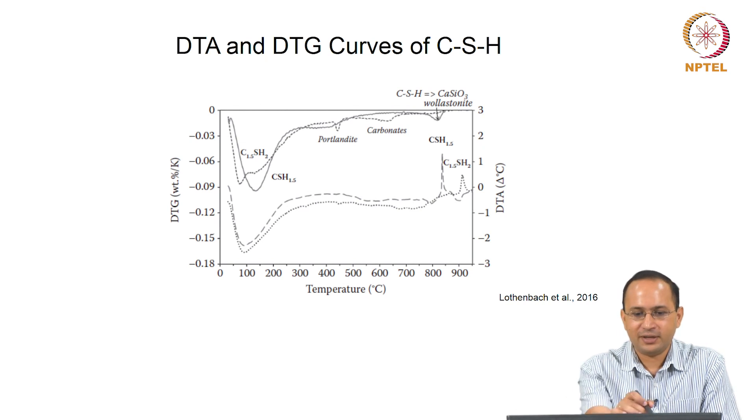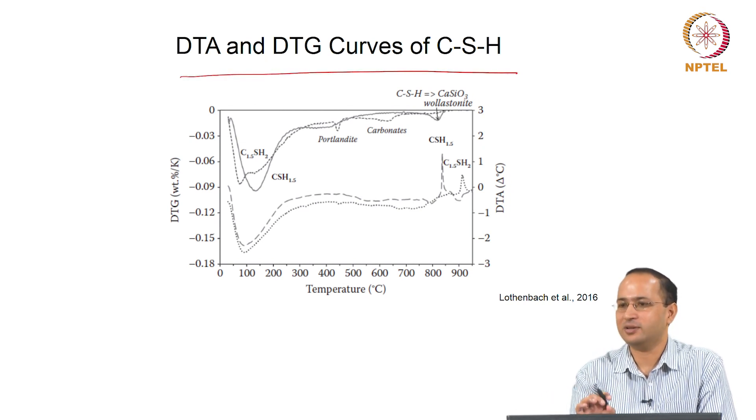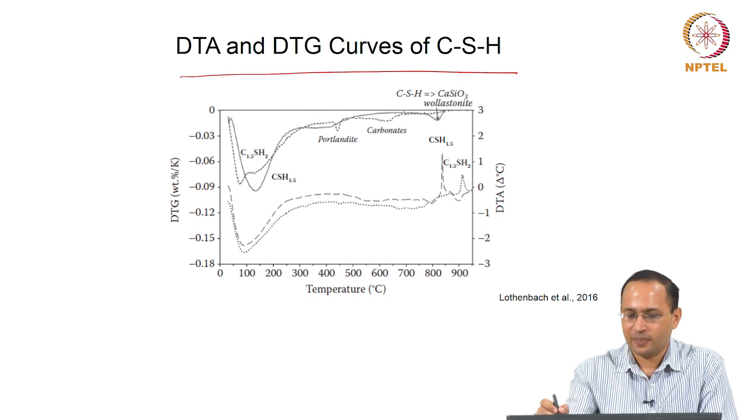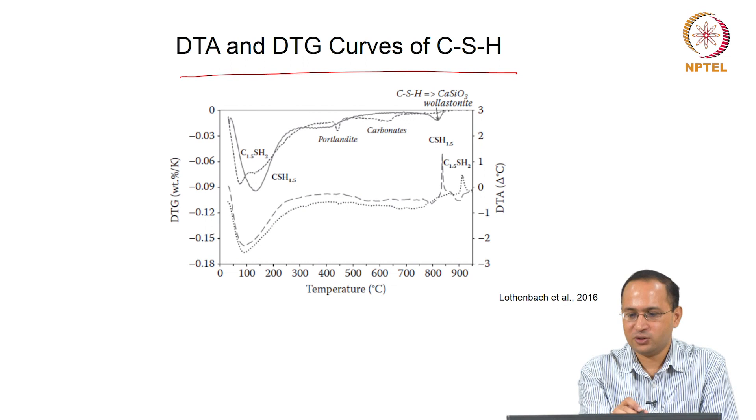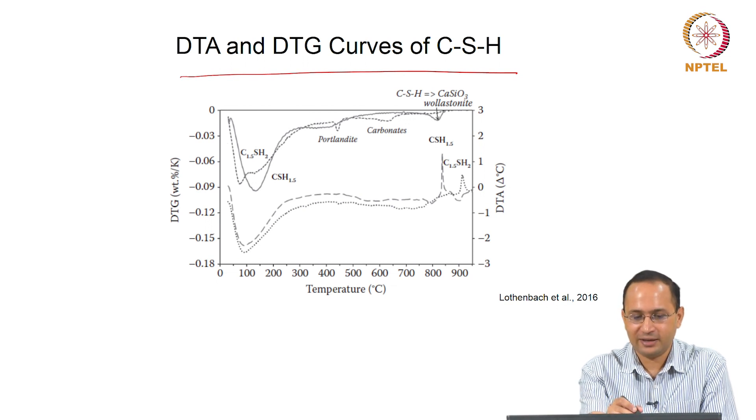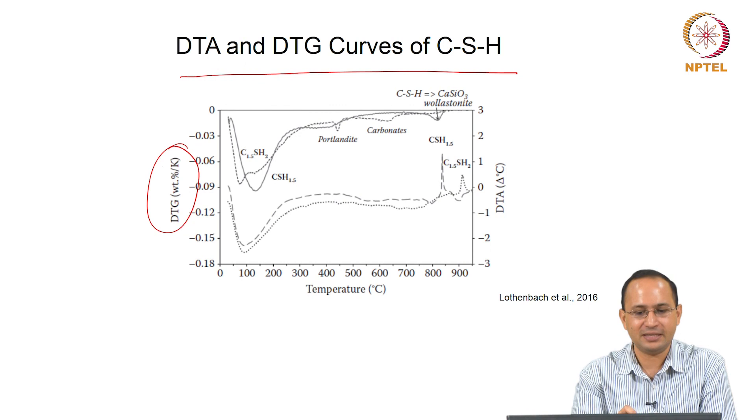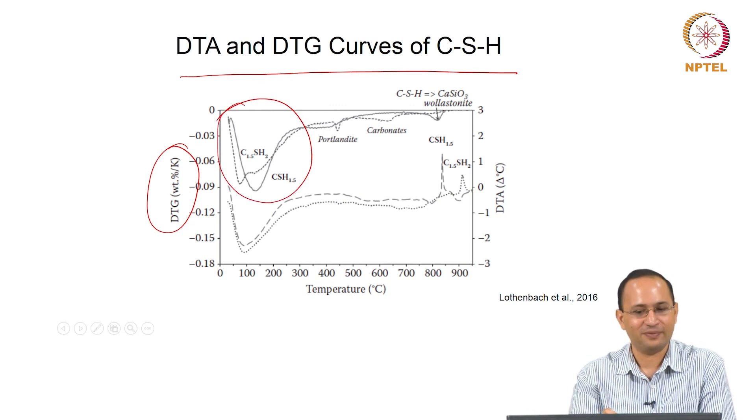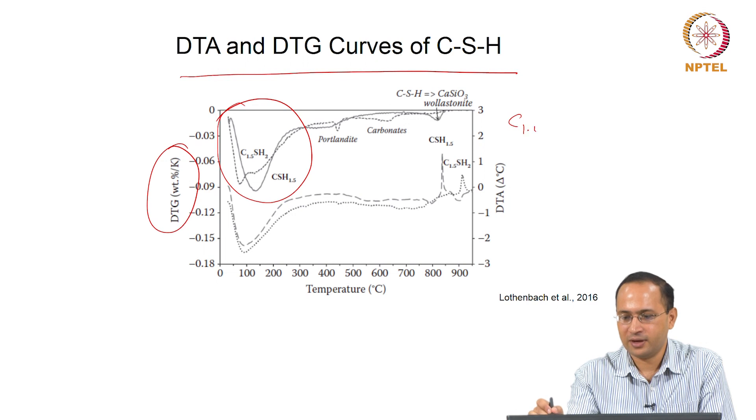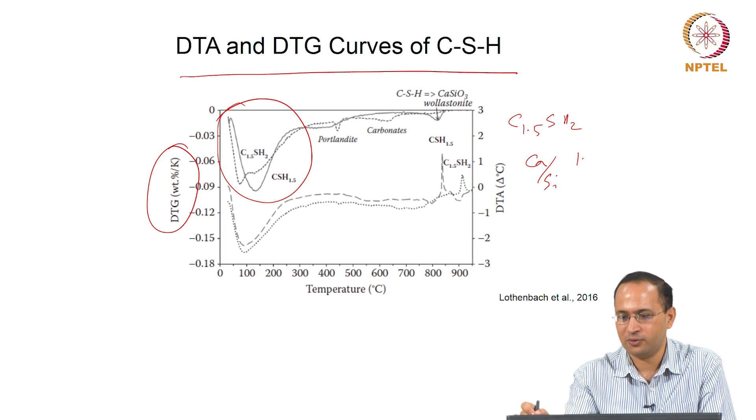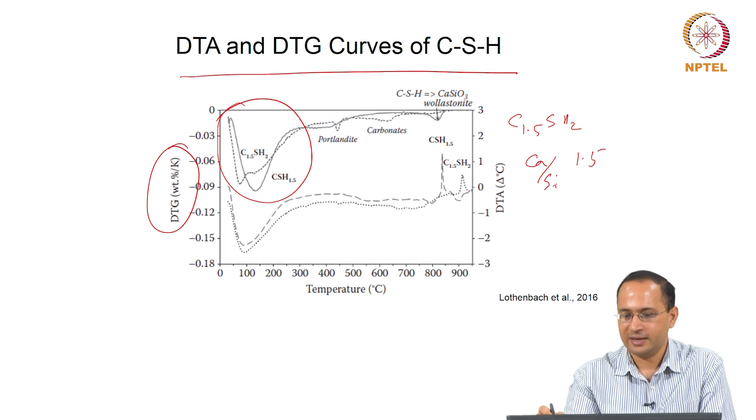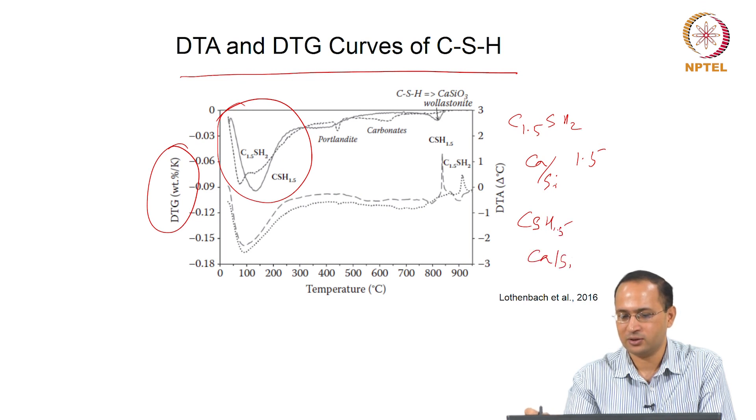Here is a DTE and DTG curve of CSH. If you look at pure CSH, calcium silicate hydrate phase, this is a DTG curve - the first order derivative of TG curve. You see this primary region because of the loss of water from CSH. They have used two different types of CSH: C1.5SH2 corresponds to calcium to silica ratio of 1.5.